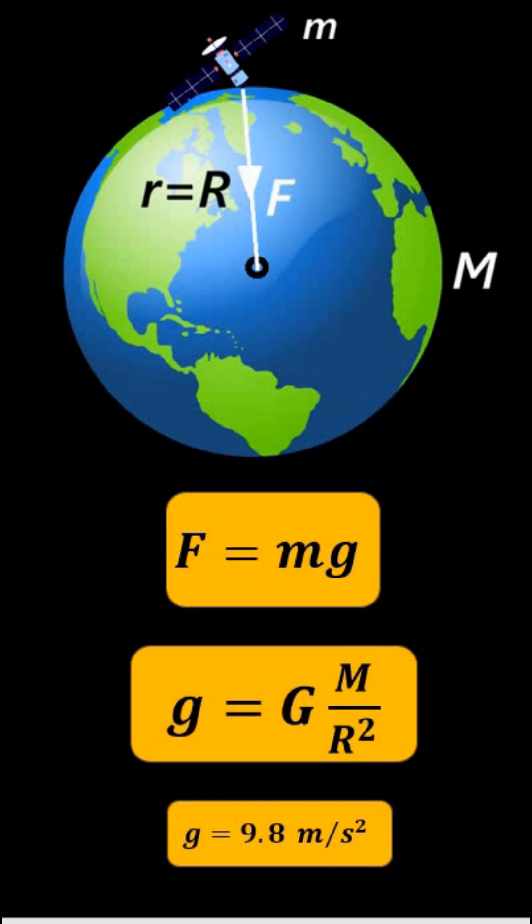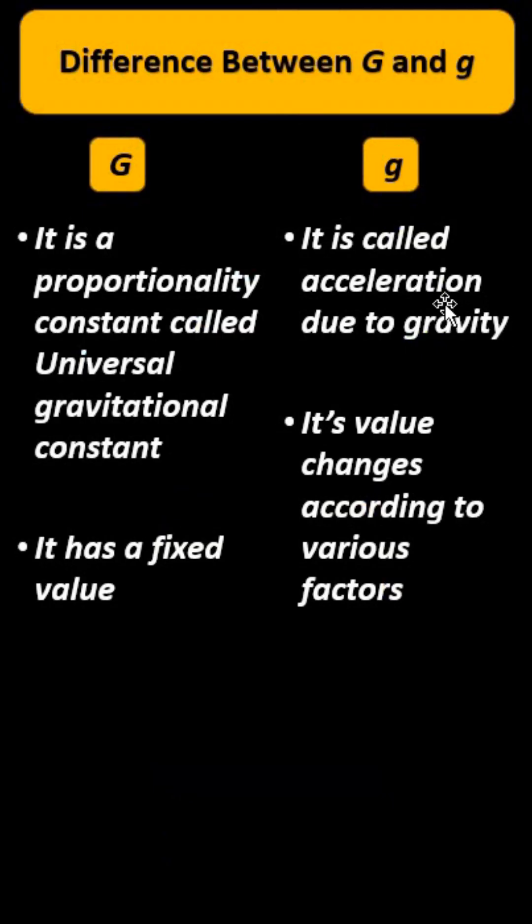Now, the difference between capital G and small g. Capital G is a proportionality constant, whereas small g is acceleration due to gravity. Capital G has a fixed value, whereas the value of acceleration due to gravity can be variable depending upon various factors.